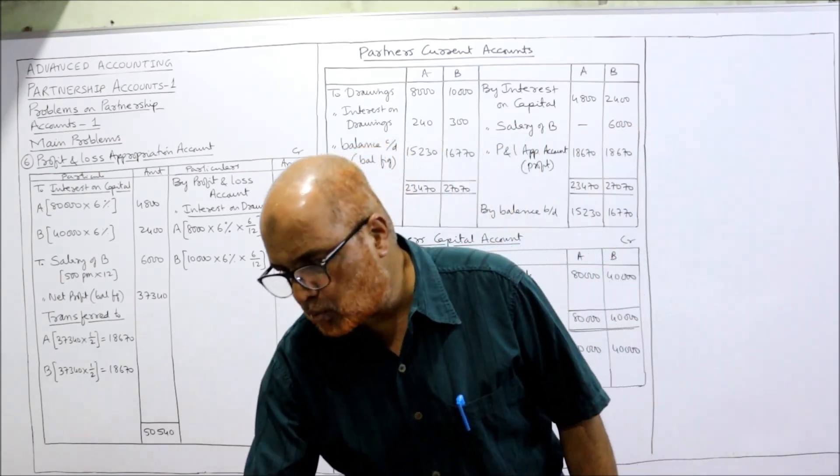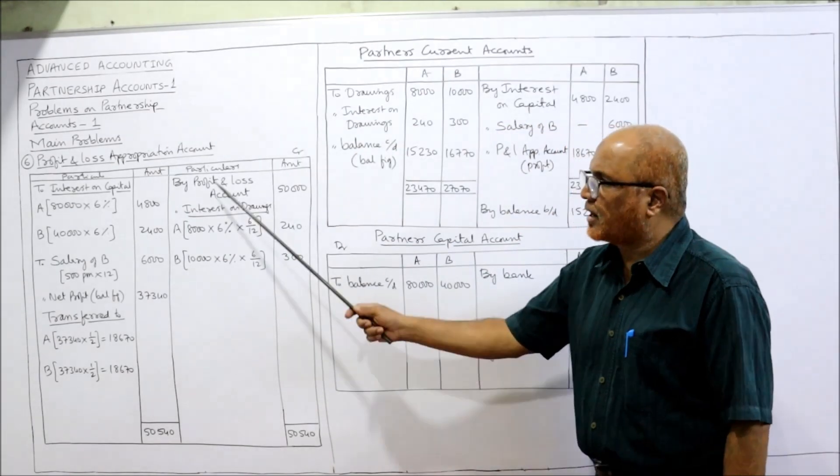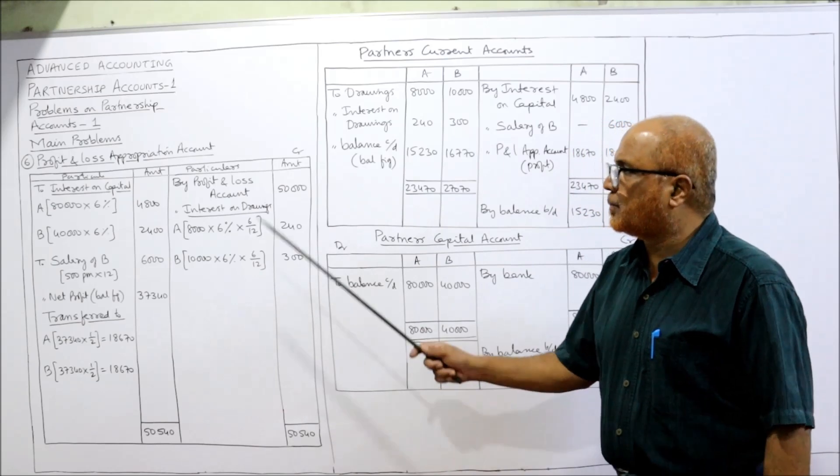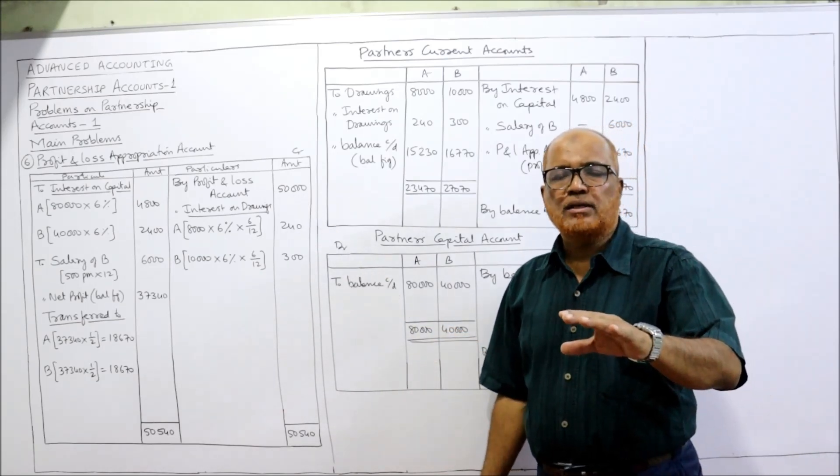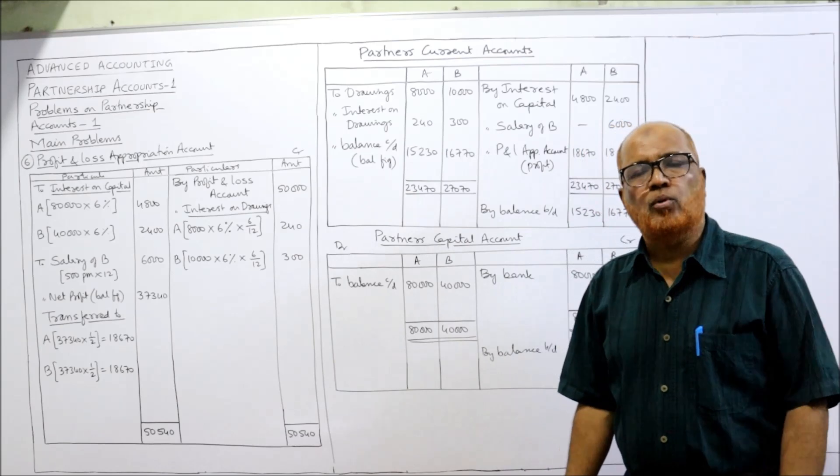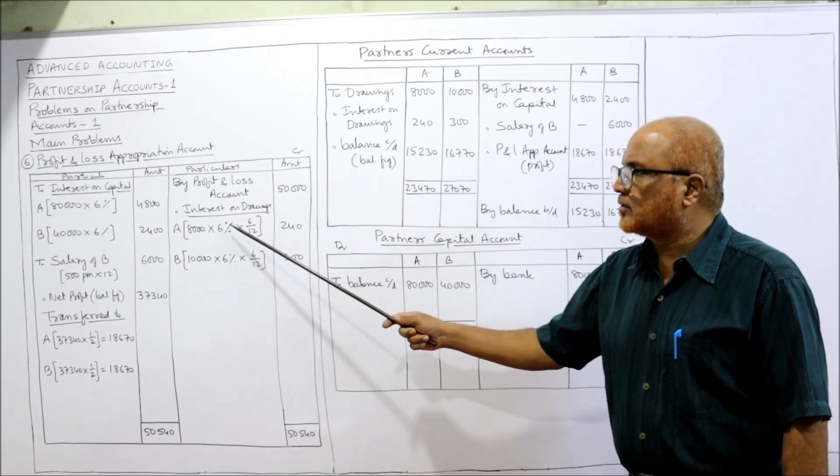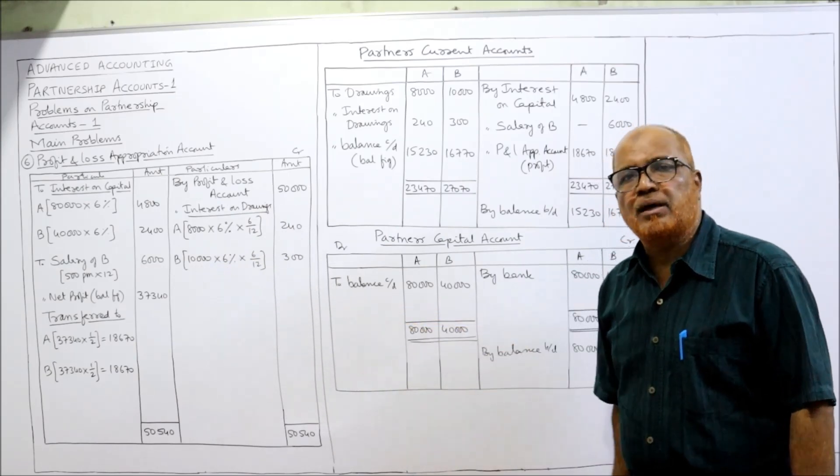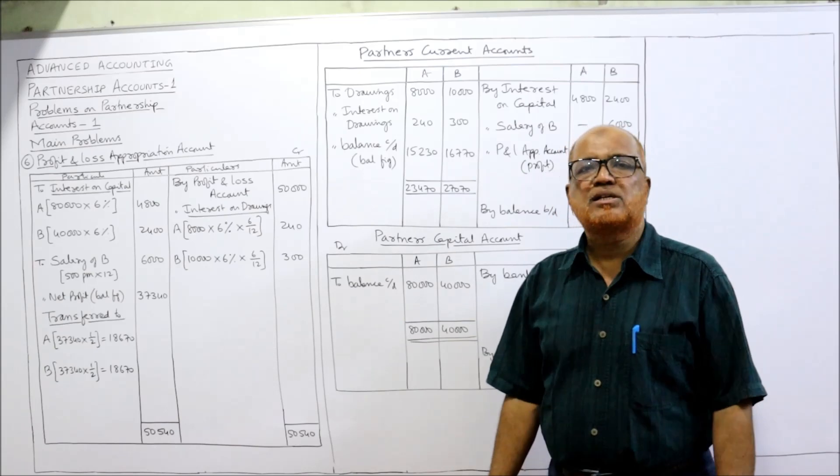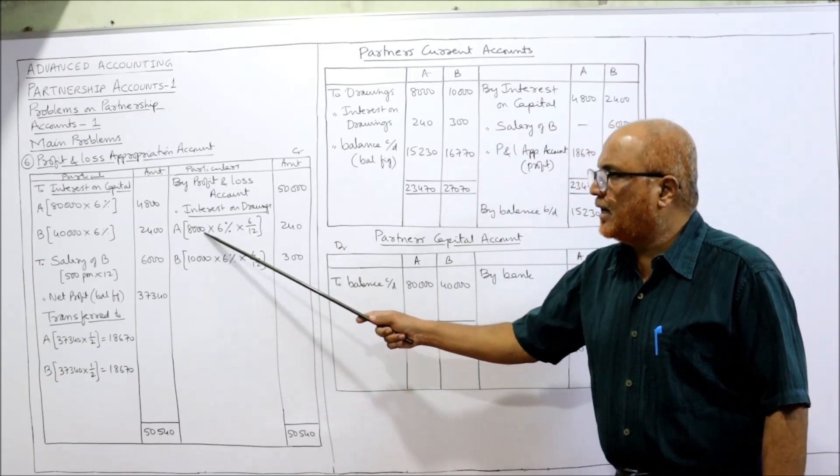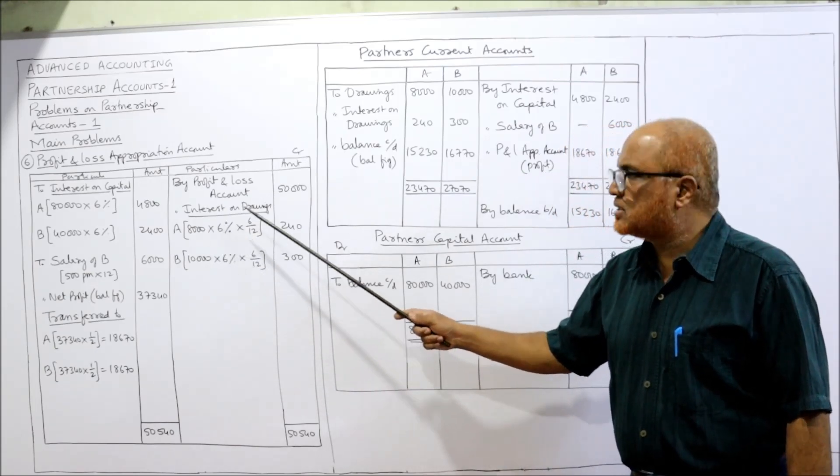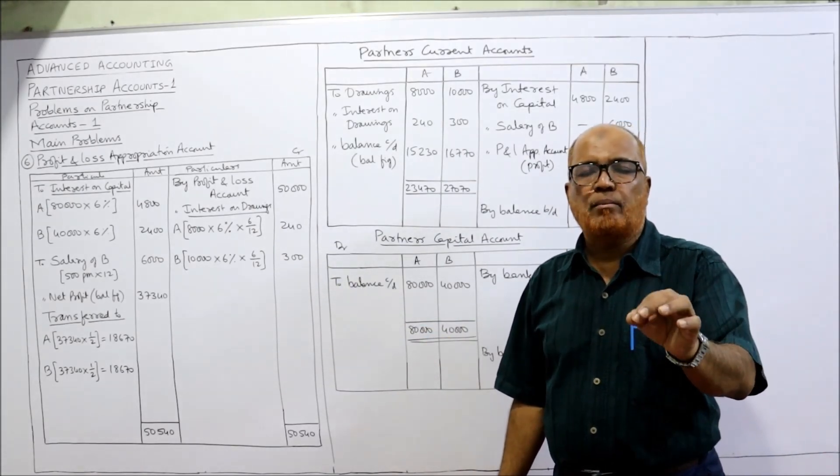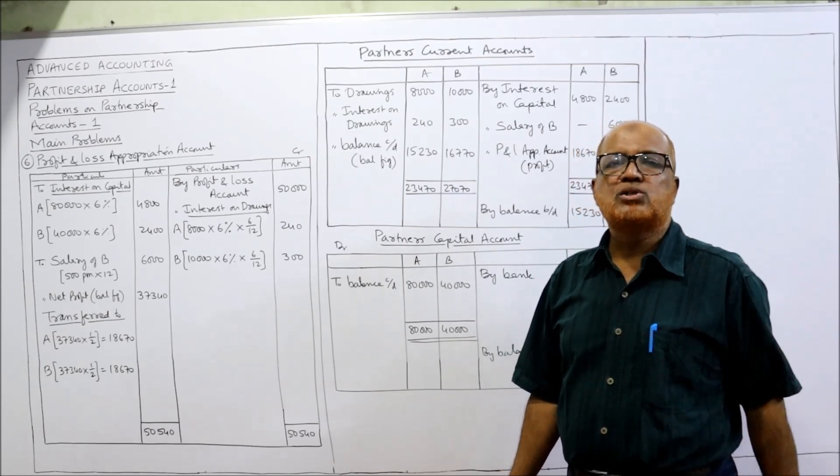First we have to prepare the profit and loss appropriation account. The profit before adjustments are given in the problem, 50,000. Interest on drawings and interest on capital both are there. So interest on drawings: drawings are given 8,000 by A, 10,000 by B, and the interest rate is 6%. So 8,000 into 6% into 6 by 12, just as I told you.